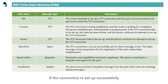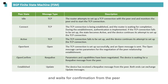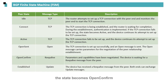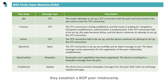If the connection is set up successfully, the router sends an Open message, the state becomes Open Sent, and waits for confirmation from the peer. If the peer responds to the Open message with a Keepalive message, the state becomes Open Confirm. When both ends receive Keepalive messages from each other, they establish a BGP peer relationship.